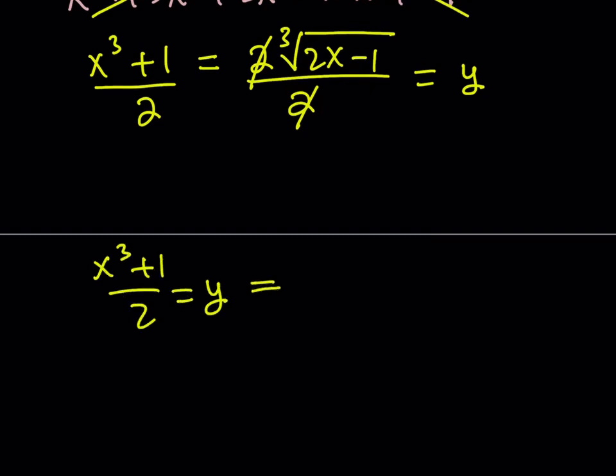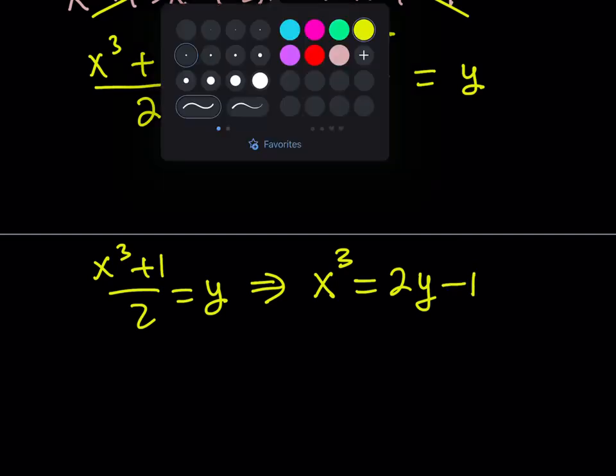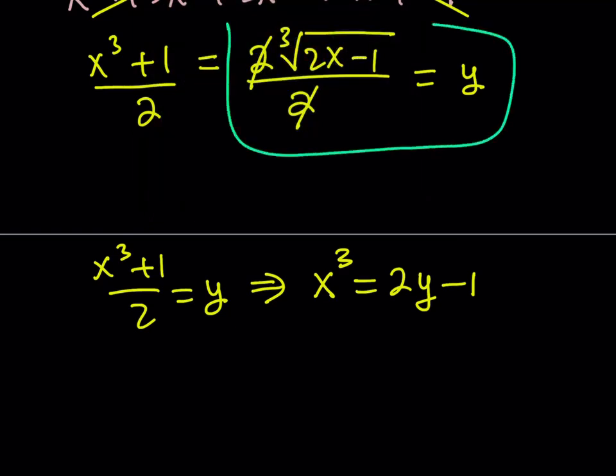From here, I can basically isolate x cubed. Multiply both sides by two and subtract one. This should give me x cubed equals two y minus one. The second part, the second equation comes from this one. We have the equality of two things here, and we can set them equal to each other. So we have the cube root of y equals the cube root of two x minus one.